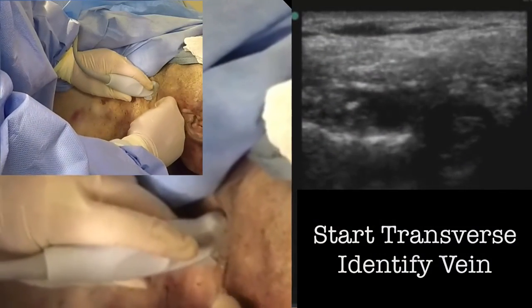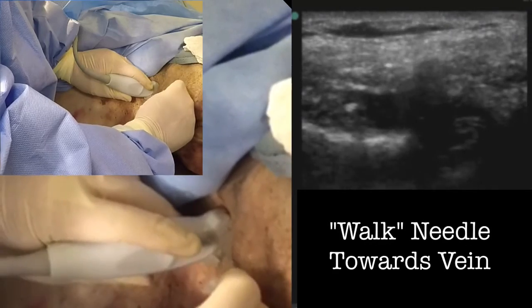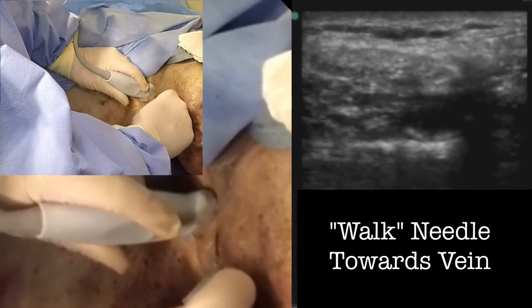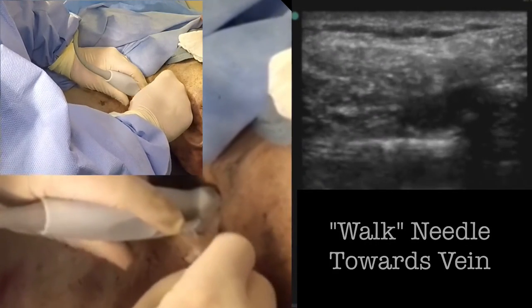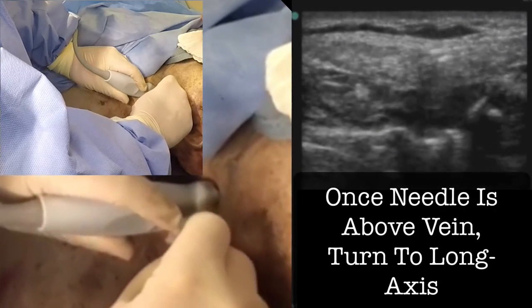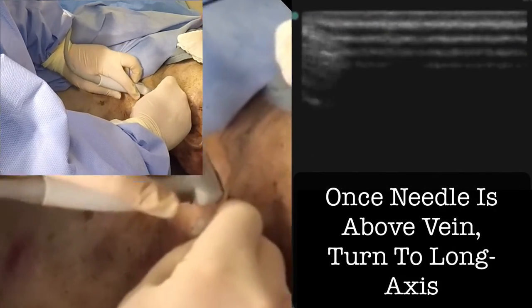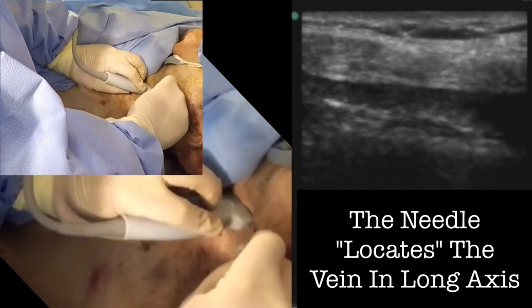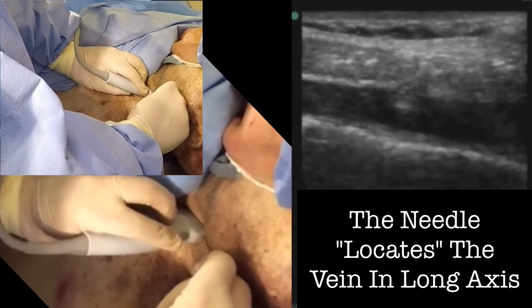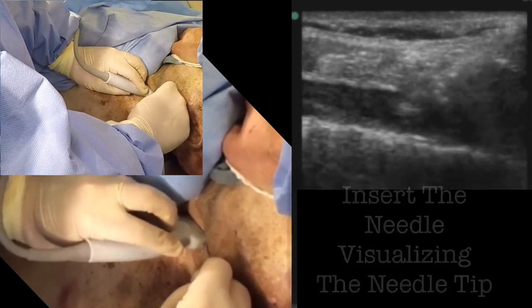In this video, you can see how difficult it is to see the needle in short axis. However, we can tell that the needle is just above the vein, and when we switch to long axis, we can see the needle in its entirety and guide it down into the vein and not penetrate the posterior wall.